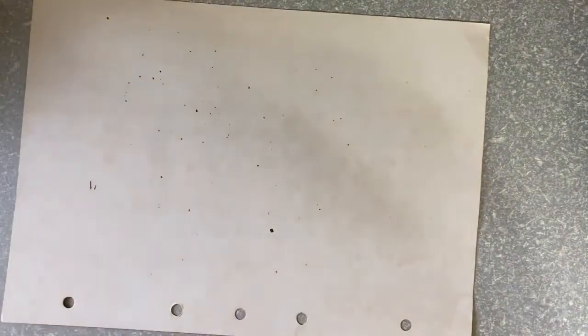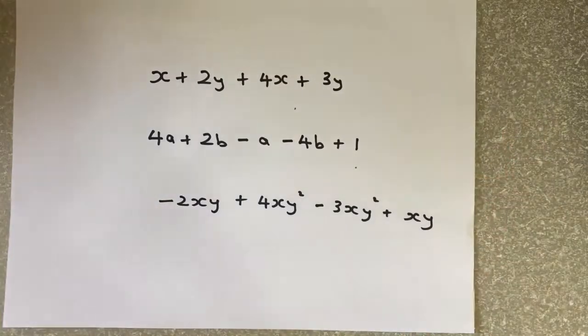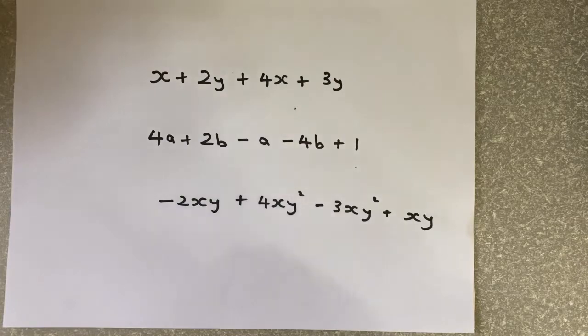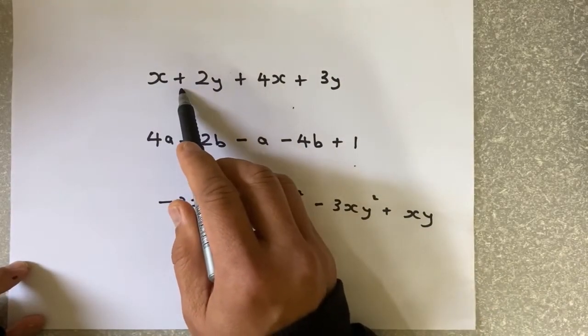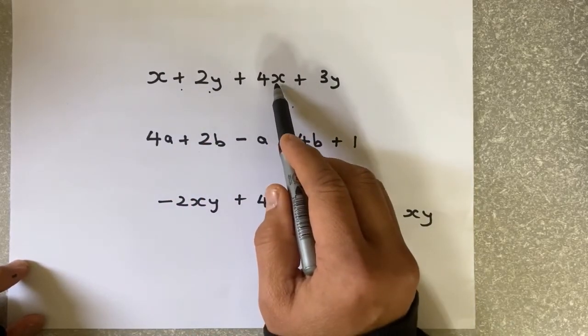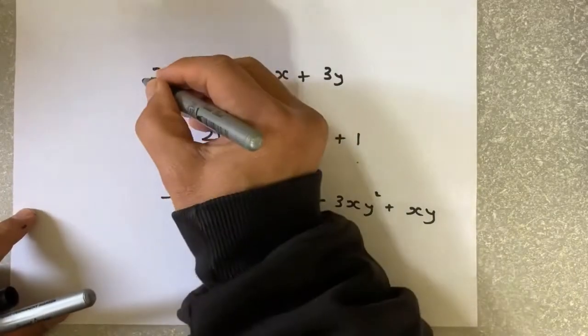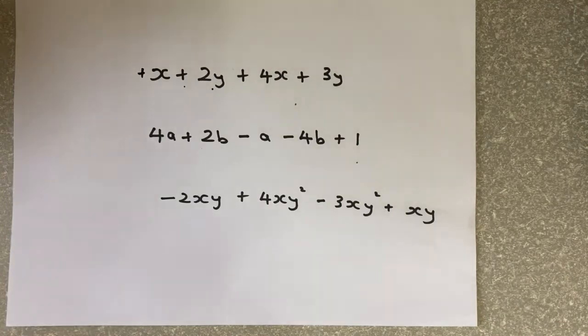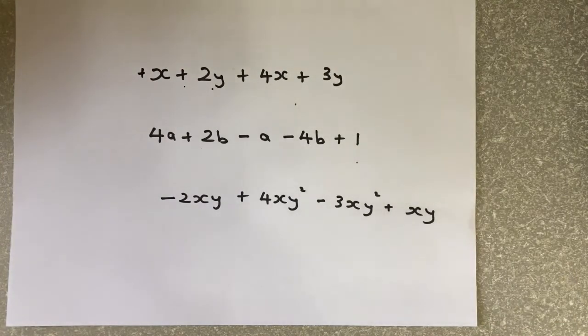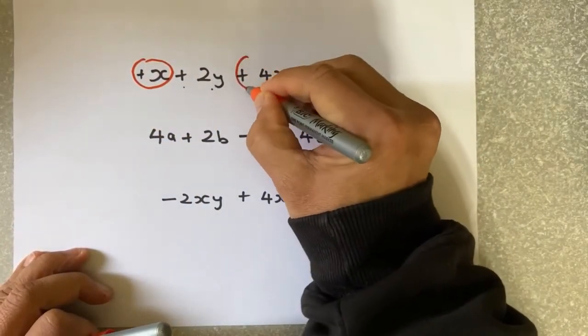Now we're going to do the last part on like terms - this will be done in year 10 as well as year 11. The first thing to note is that the plus operation - this plus belongs to 2Y, that plus belongs to 4X, and that plus belongs to 3Y. There's no plus or minus on the X, so you can technically put a plus there. Now you're going to add the like terms. Which ones are like terms? You're going to circle them.